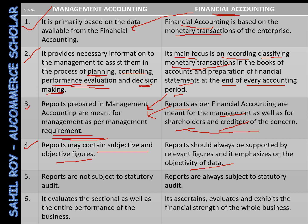This means that whatever you report in financial accounting must be objective — you need supporting documents such as a bill or invoice. Every transaction recorded must have a documented basis.